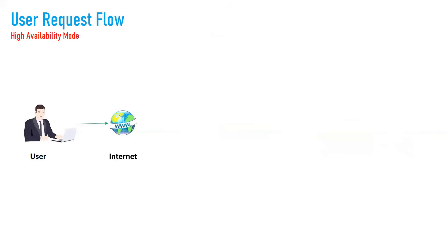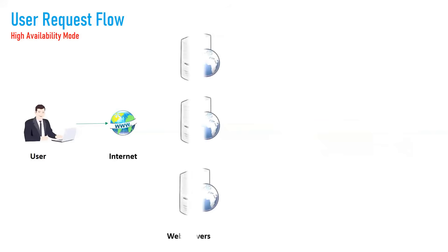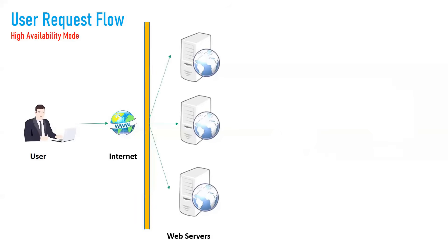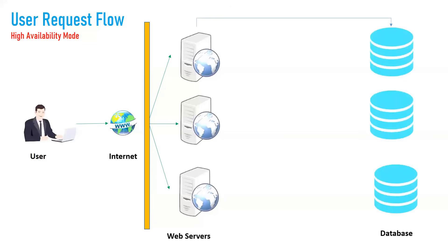From a high-availability standpoint, a user accesses the internet and the request is served by the web server. High availability means multiple servers are running in parallel, running the same set of applications. If you have one server and it crashes, you can't access your application. To build your application in high-availability mode you need multiple servers — if one crashes, requests can be served by the others. For example, three web servers in a parallel setup configured with the same web applications.